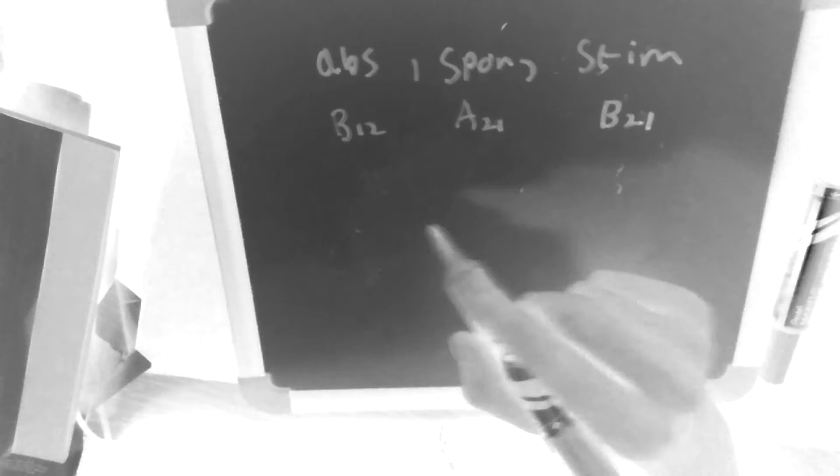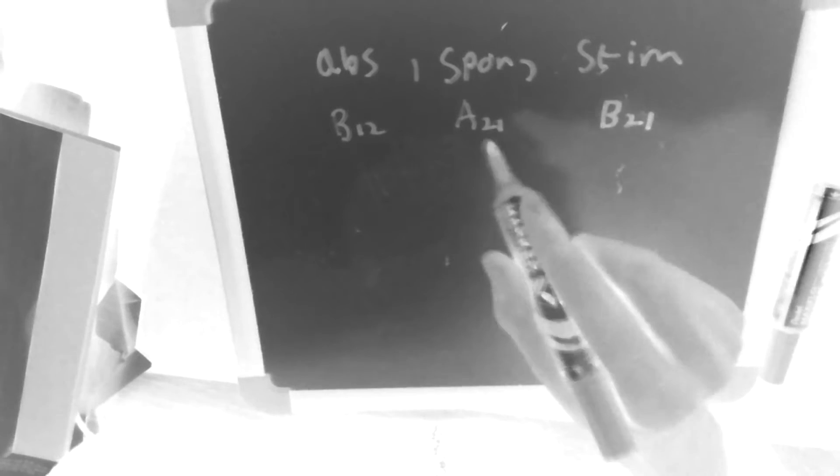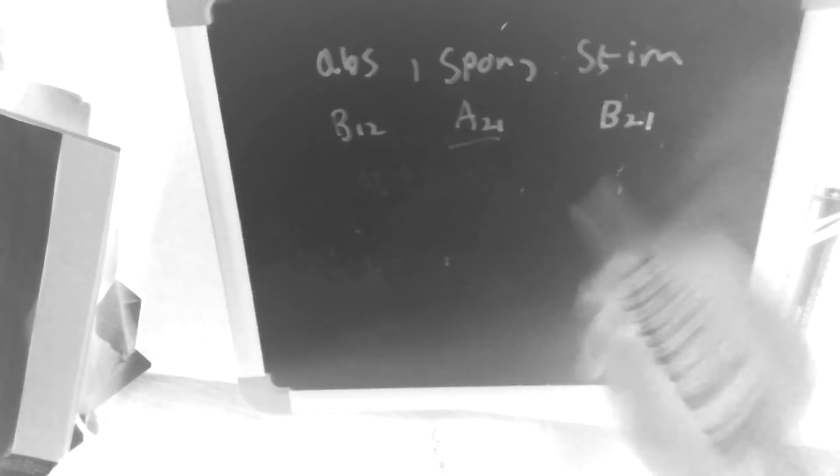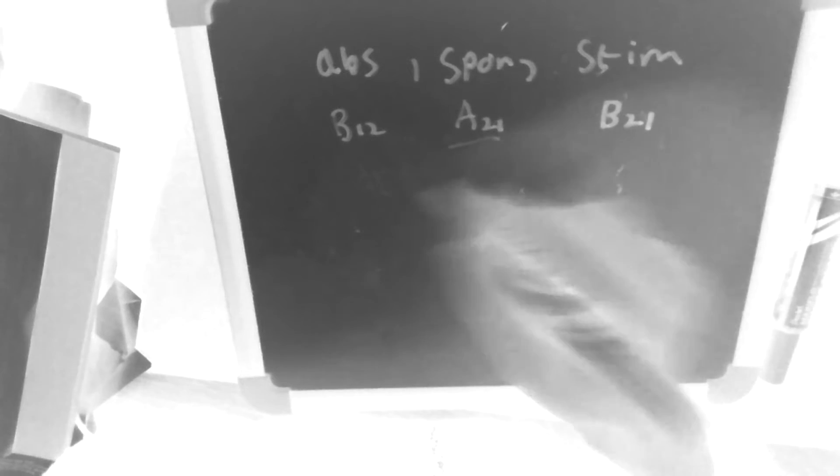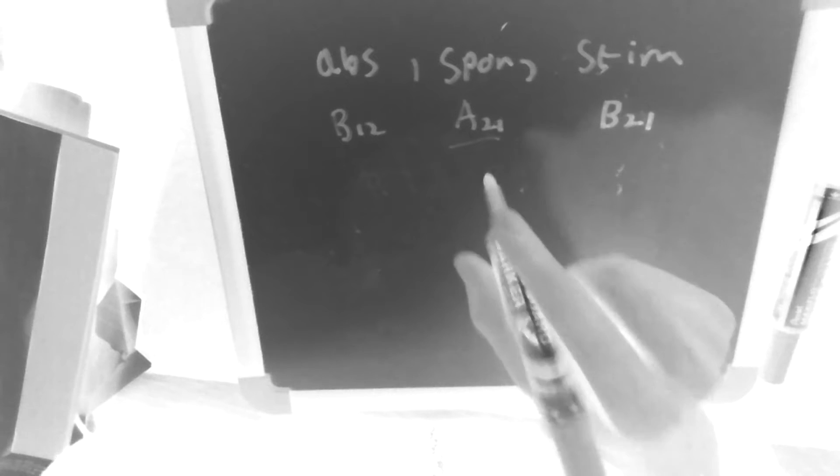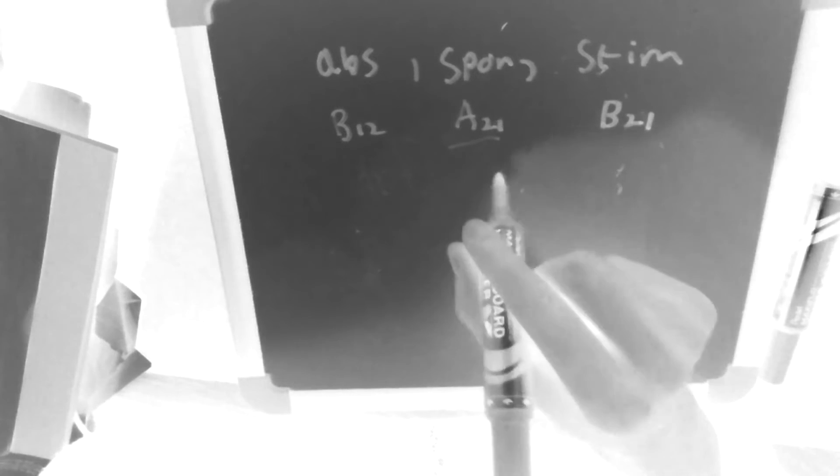Okay, so let's start with the easiest, and that's spontaneous emission because you don't need anything external. A21 is simply the probability per unit time that an atom or an electron in level 2 will spontaneously decay to level 1.